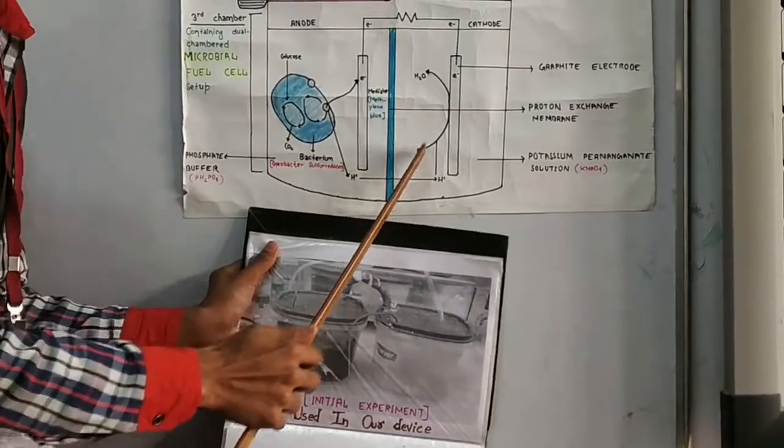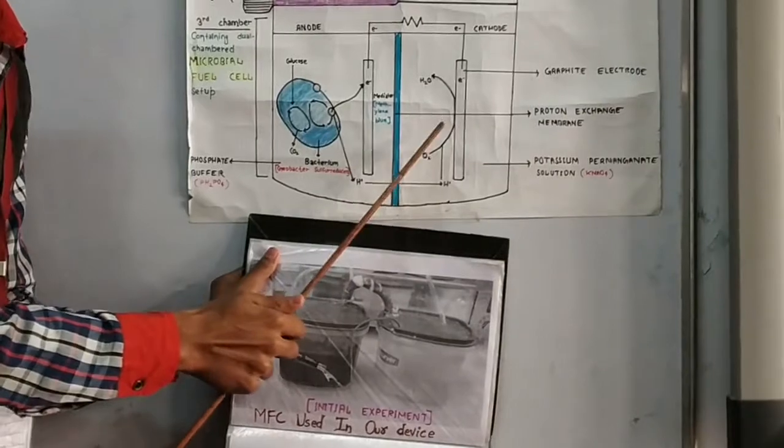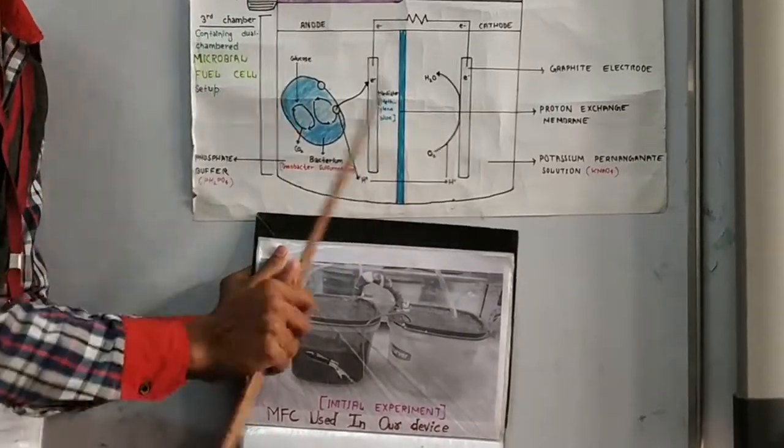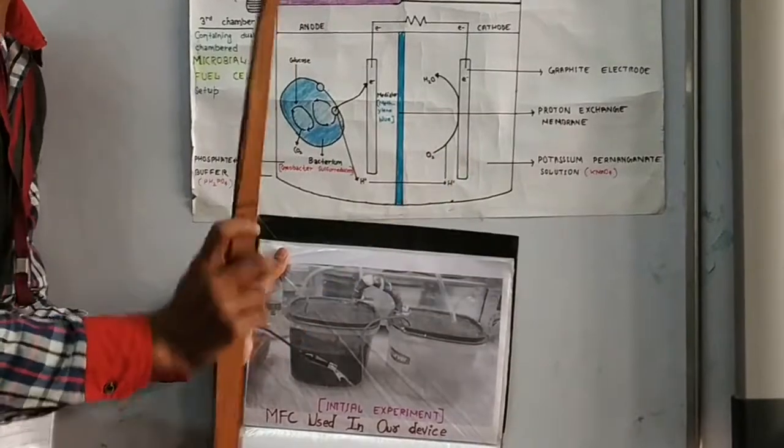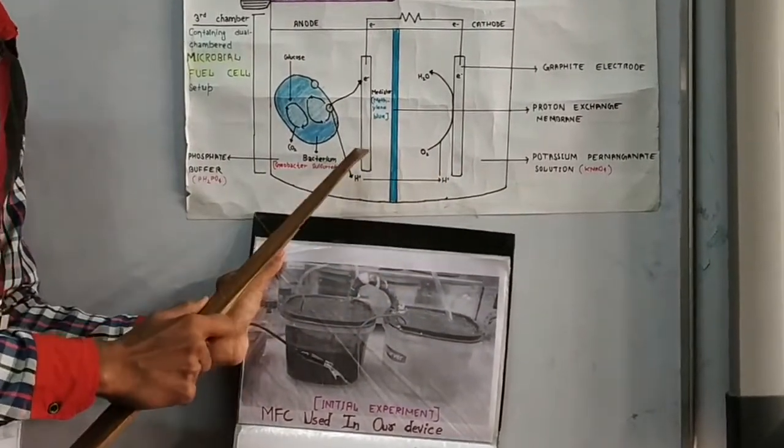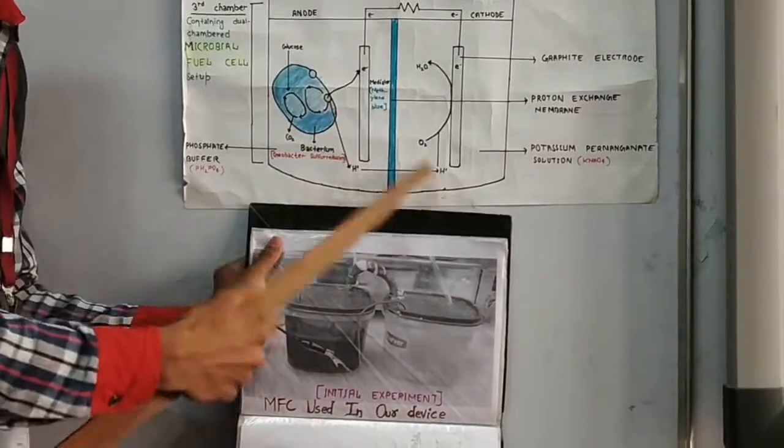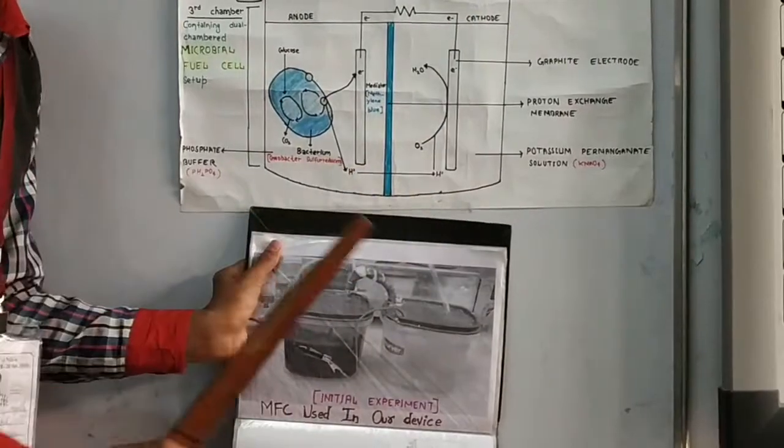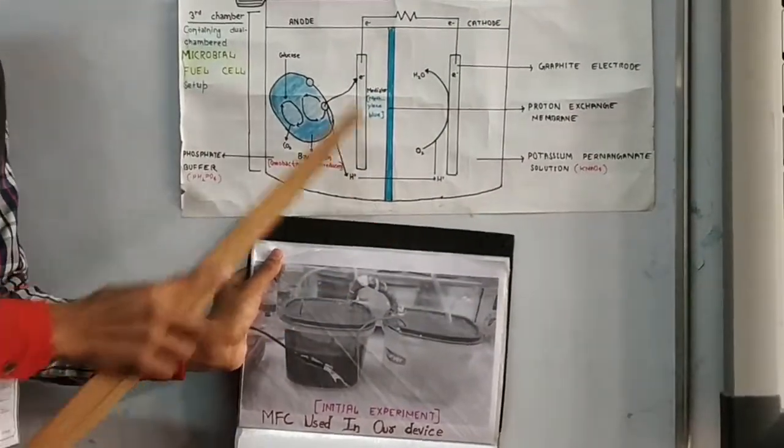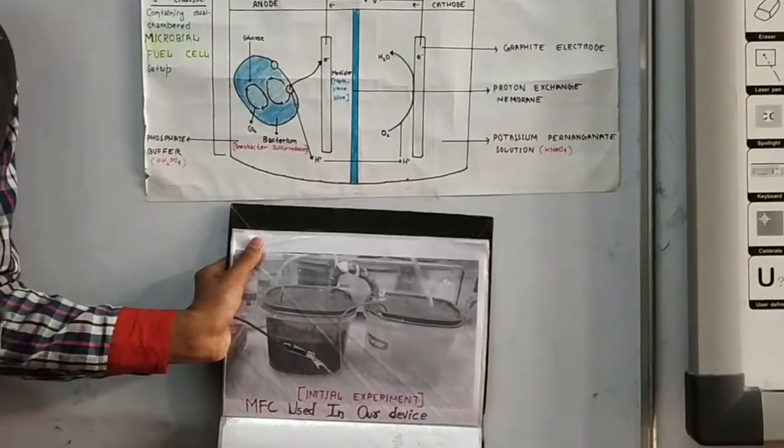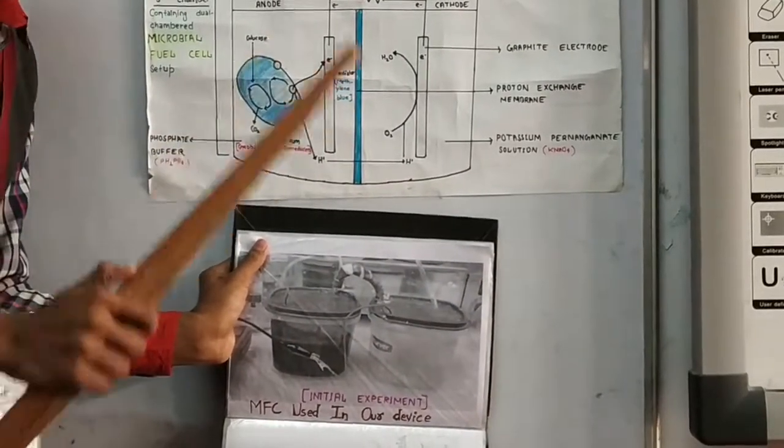This is a potassium permanganate solution where we used 10 liters of food waste. When the proton, which is a hydrogen ion, goes into the cathode chamber, it reacts with O2 to form H2O. But for this reaction, electrons are required. For that requirement, the electron flow starts. As the requirement increases, the flow increases.